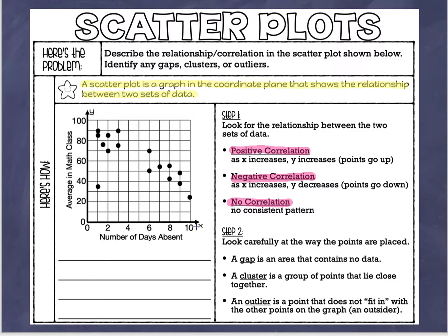Looking at this graph, I would say the points are going down — the higher the number of days absent, the lower the average in math class. Reading from left to right, the points go down, so I would describe this scatter plot as having a negative correlation. They're not in a perfectly straight line, but for the most part they're going down.